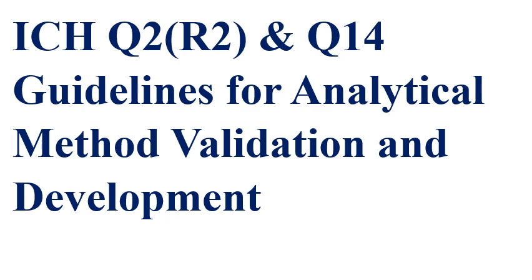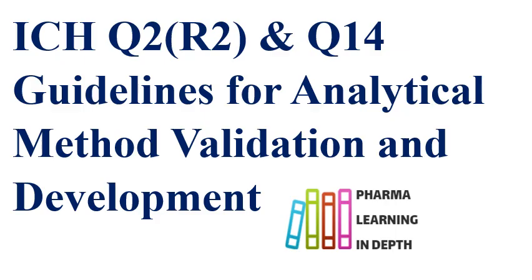There are two main guidelines to be understood and considered for analytical method development and analytical method validation. Those guidelines are provided by the ICH. The first guideline is ICH Q2 R2 and the other is ICH Q14. ICH Q2 is for analytical method validation and ICH Q14 is for analytical method development. We should always consider ICH Q14 first for development, and then ICH Q2 for method validation.